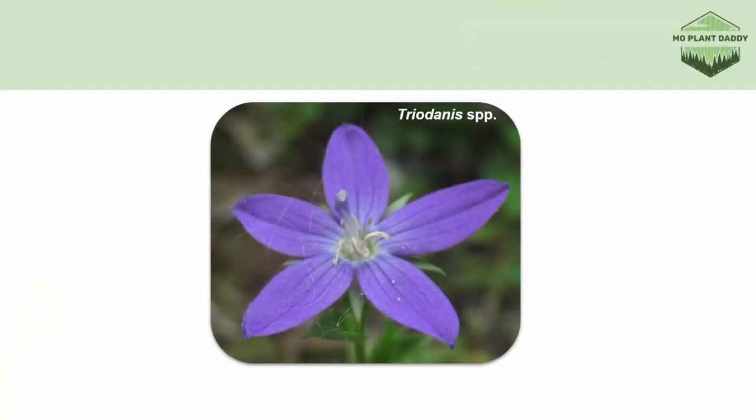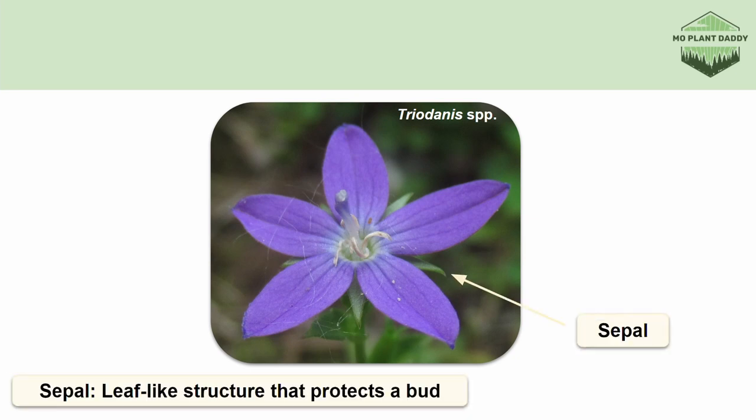To help us learn some general information we have a Venus's looking glass flower. A flower itself is made up of modified leaves that look very different than what you might think of as a leaf. The first thing we want to do when identifying a flower is to see what sort of modified leaves it has. The first modified leaf type we're going to look for are sepals, which are leaf-like structures that protect a bud.